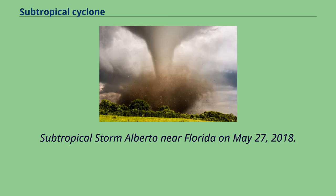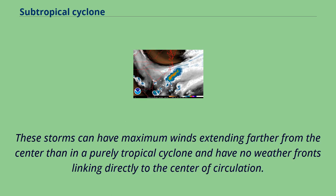Subtropical Storm Alberto near Florida on May 27, 2018. These storms can have maximum winds extending farther from the center than in a purely tropical cyclone and have no weather fronts linking directly to the center of circulation.